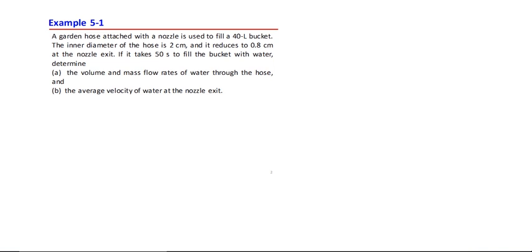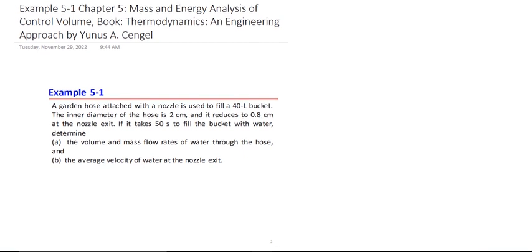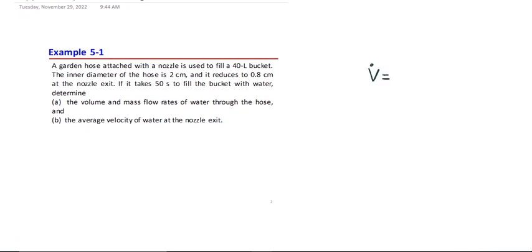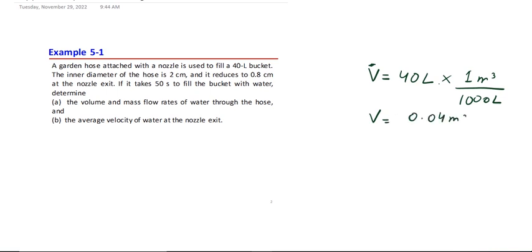We have a garden hose attached with a nozzle used to fill a 40-liter bucket. The volume of the bucket is V = 40 liters. To convert into meter cube, we multiply by one meter cube divided by 1000 liters, giving us 0.04 meter cube.